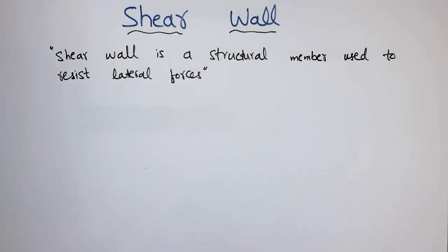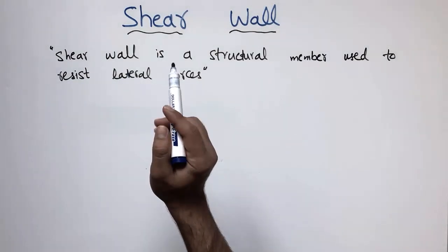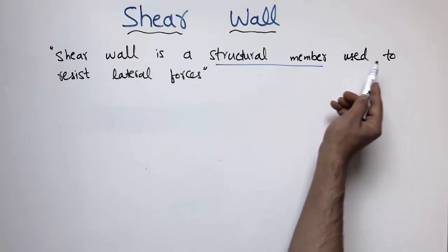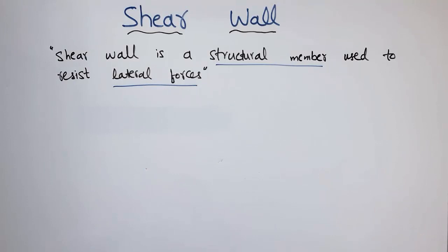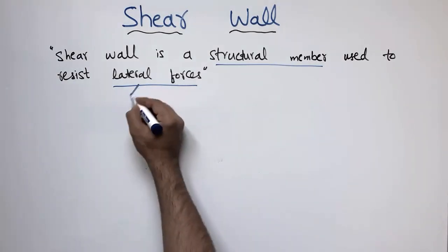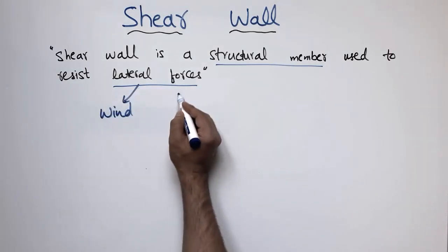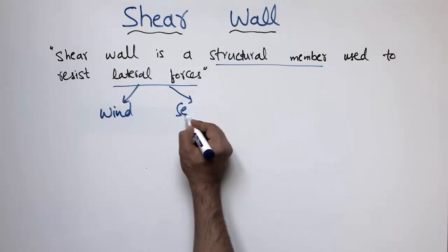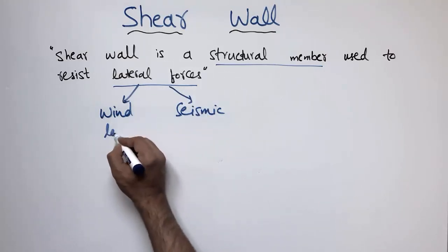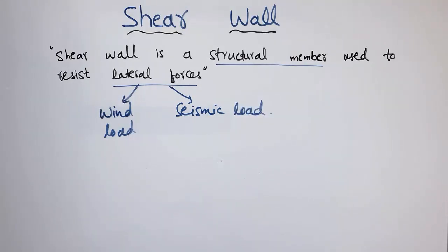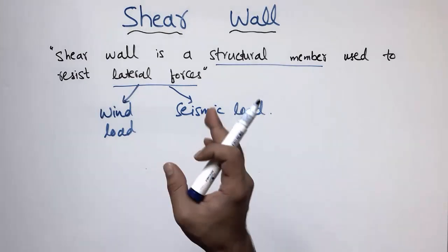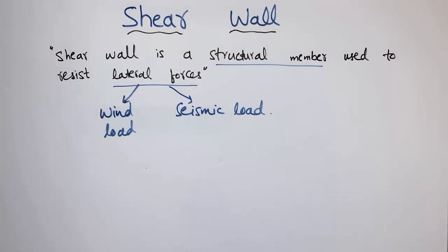The shear wall is a structural member used to resist the lateral forces. The lateral forces are mainly the wind forces — the wind load — and the earthquake load, or the seismic load. Those structures which are mostly prone to earthquake or wind loads are mostly designed with shear walls. So the main purpose of the shear wall is to resist these horizontal forces.